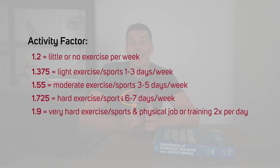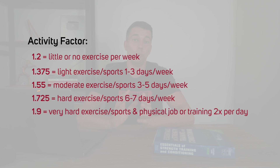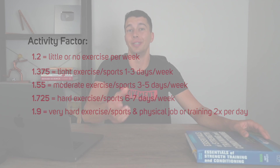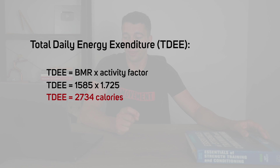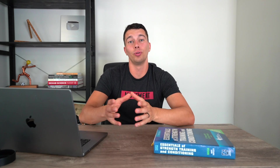In this hypothetical example, the athlete is training six times a week and gets 10,000 to 11,000 steps per day, so the most appropriate activity factor is 1.725. We take that BMR of 1,585 times 1.725 and come up with a total daily energy expenditure of 2,734 calories — our estimated maintenance calories for this athlete.